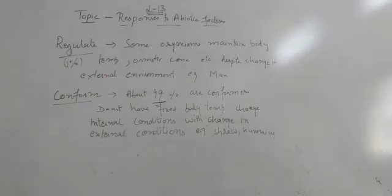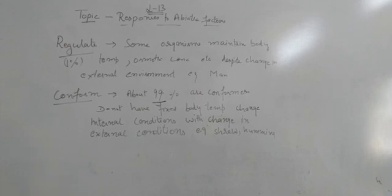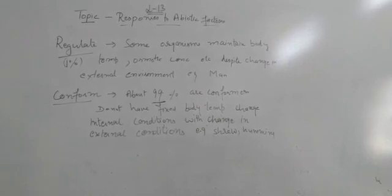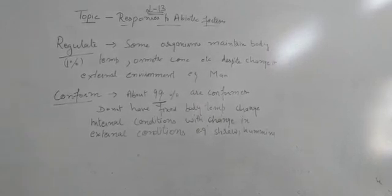What are conformers? Basically, conformers are those which do not have their fixed body temperature or you can say the fixed internal environment or internal conditions. What is happening in these animals? Their body temperature, their internal environment, you can say osmotic pressure, all these things are changing by the change of external environment.